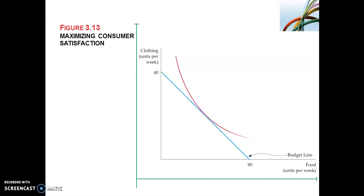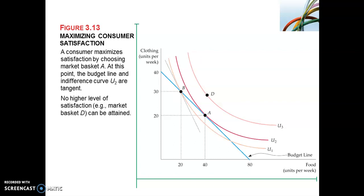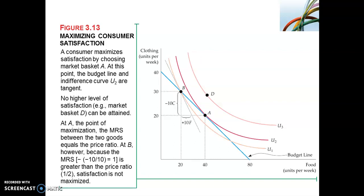We can show the solution to this consumer choice problem graphically in Figure 3.13. Here we have three indifference curves: U1, U2, and U3. We know that U3, the indifference curve furthest from the origin, will yield the highest amount of satisfaction. We also see three different market baskets. At point B, you are on U1, which is not the preferred market basket, as you are on a lower indifference curve. Although the point lies on the budget line or budget constraint,